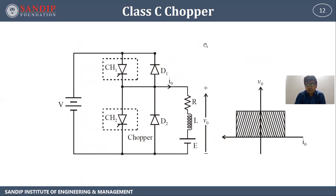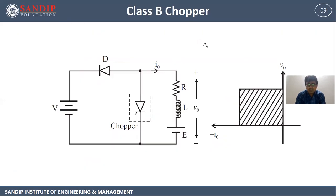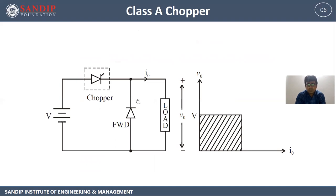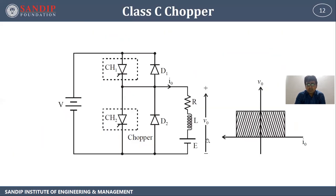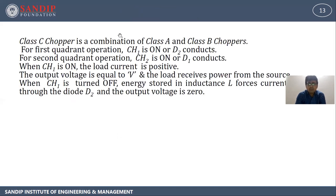Class C chopper. Class A chopper consists of a chopper and diode; class B chopper has a diode and a chopper. If we combine class A and class B, we get from class A: output voltage positive and output current positive; from class B: output voltage positive and output current negative. So we will be getting a two-quadrant chopper. This is the circuit diagram of class C chopper. Class C chopper is a combination of class A and class B choppers.